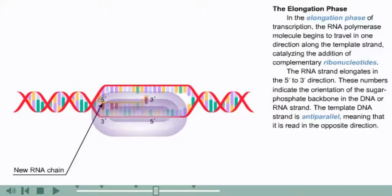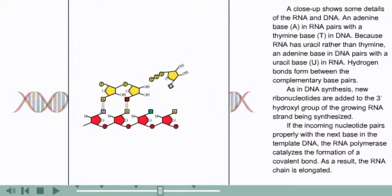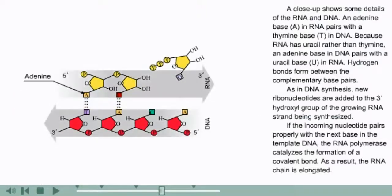meaning that it's read in the opposite direction. A close-up shows some details of the RNA and DNA. An adenine base (A) in RNA pairs with a thymine base (T) in DNA. Because RNA has uracil rather than thymine,